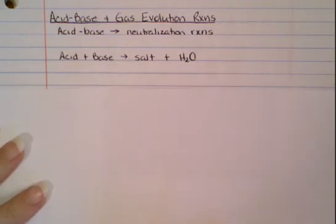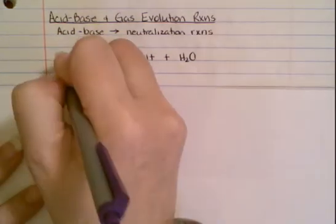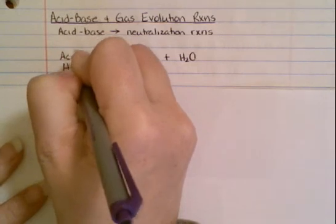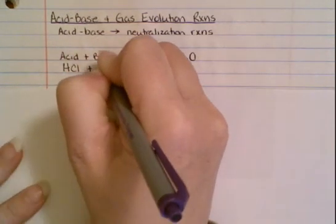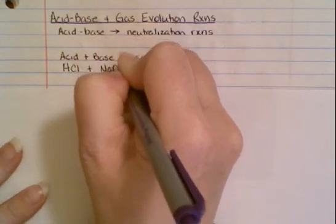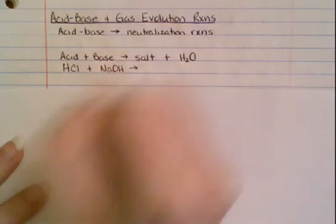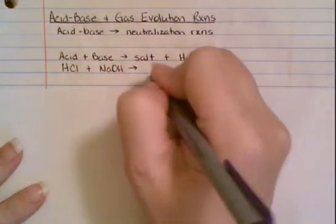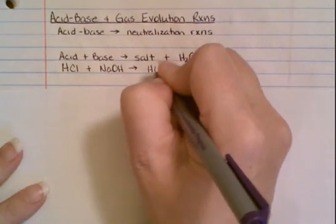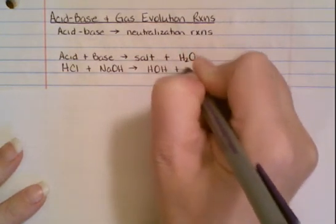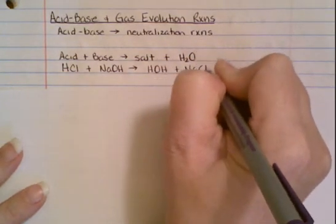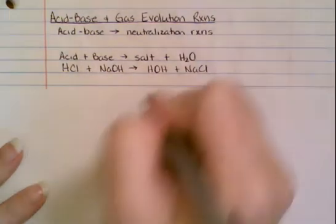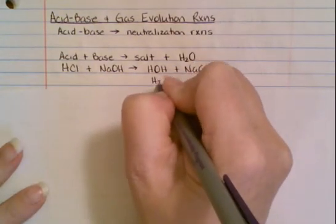So what would be an example of this? Well, let's say we had hydrochloric acid and sodium hydroxide. You notice that it's a double displacement. If you wanted to, you could just switch out your partners and you would actually end up with HOH and NaCl. And out of convention, we just write the HOH as H2O.